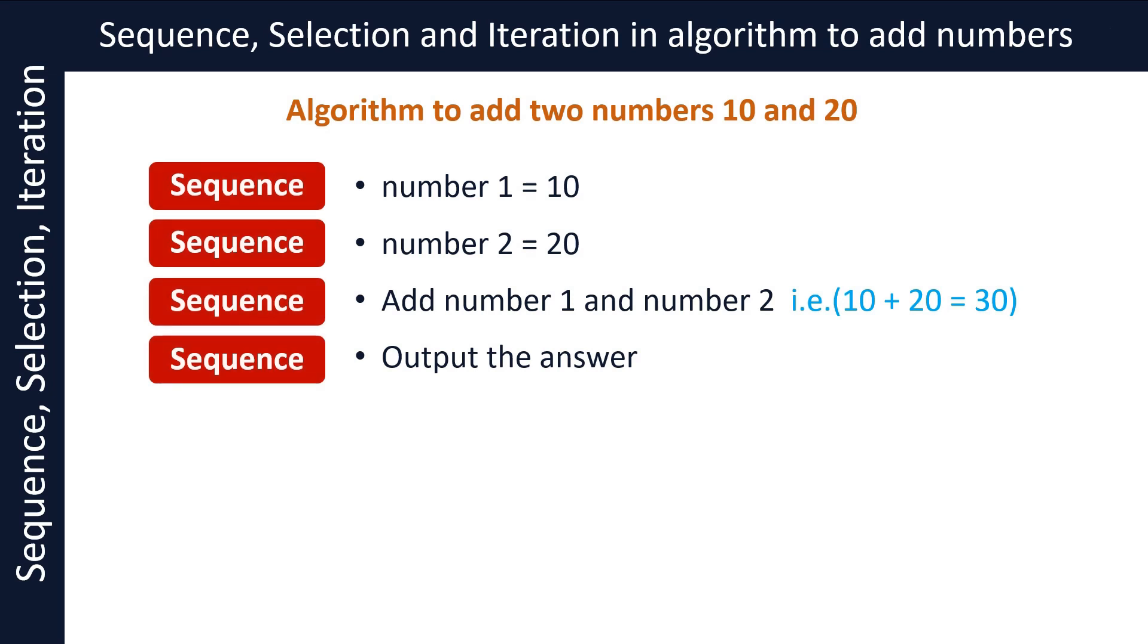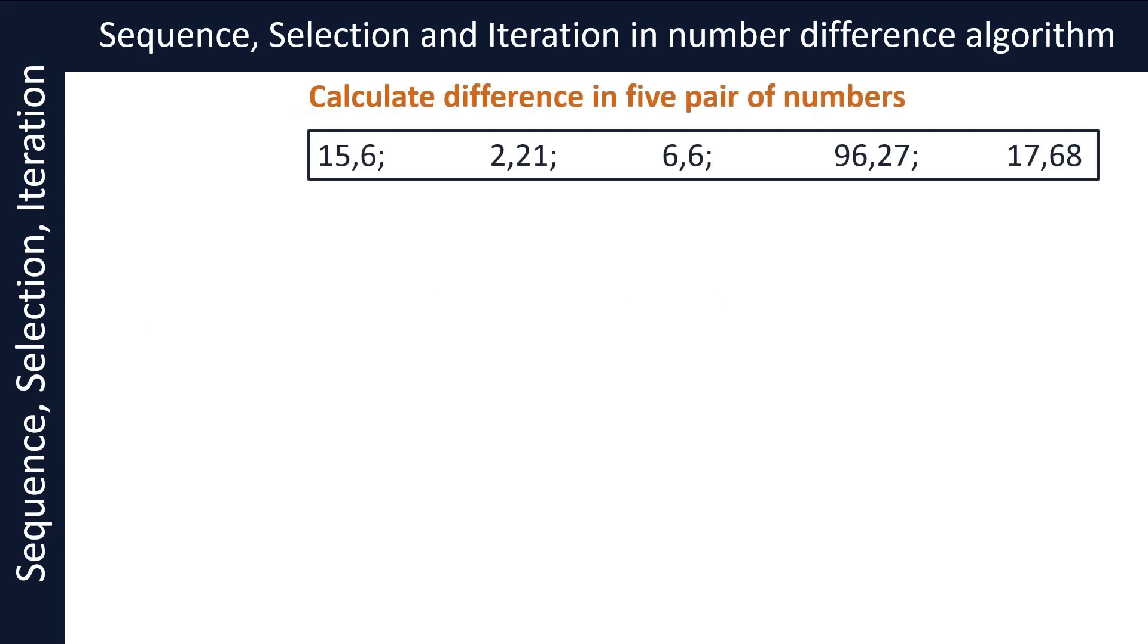Finally, let's see what constructs are used in the number difference algorithm. Number difference algorithm allows us to input pairs of numbers at a time from five pairs and find out the difference in them. The result is stored as the third number and the result stored in the third number is output.